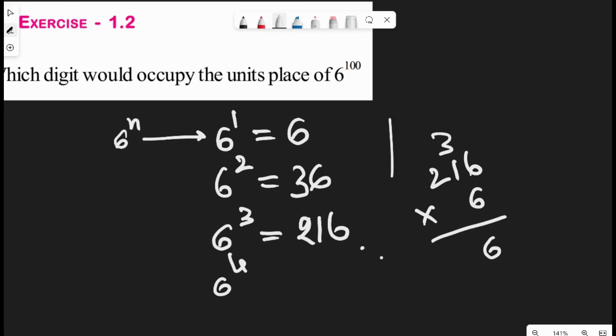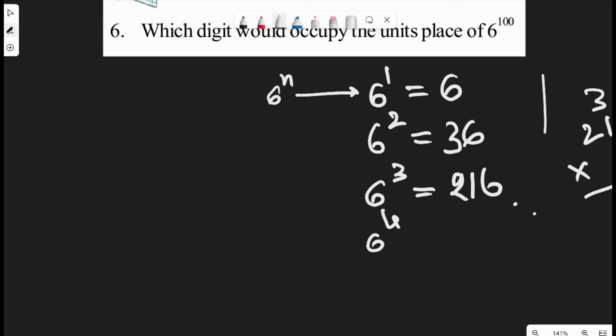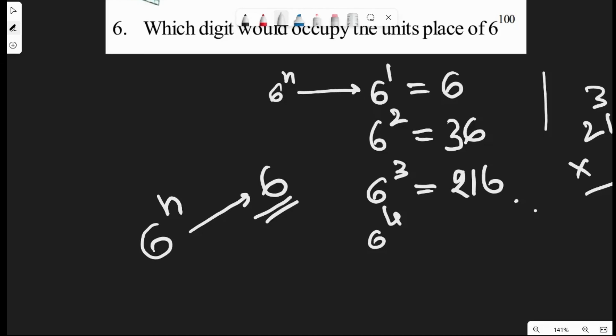It always ends with the digit 6. So for any value of n in 6 power n, the units place will always end with 6. Therefore, the digit that would occupy the units place of 6 power 100 is 6. I hope you understood the sum — thanks and bye bye.